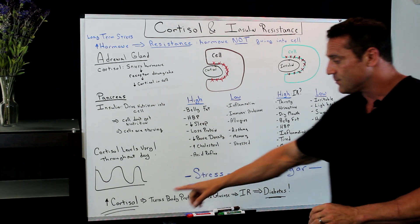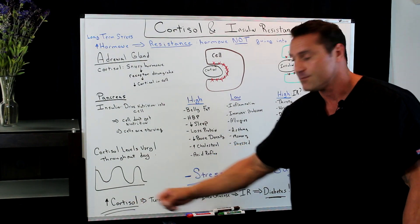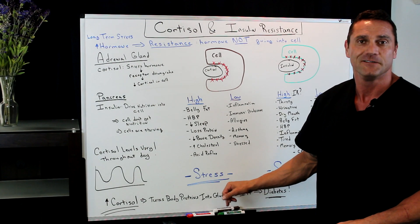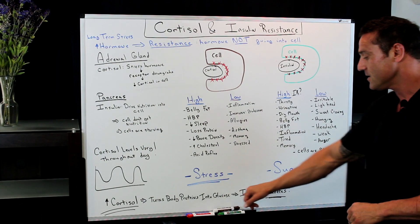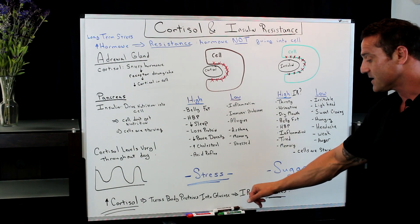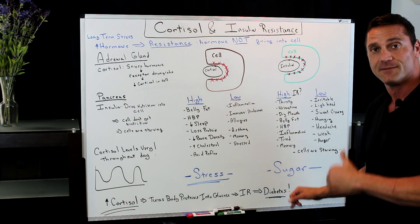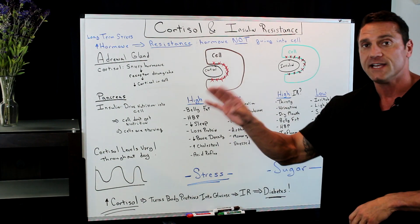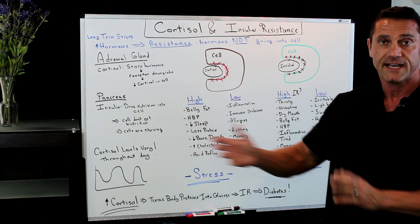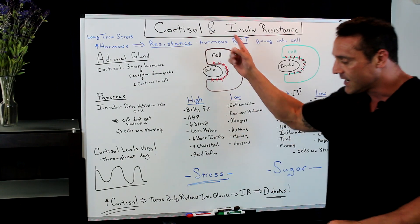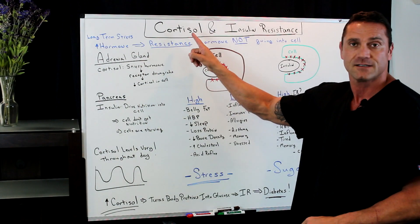When you have too much cortisol in your system, it turns the body proteins into glucose, which in turn, now you have too much glucose flowing around your system, which makes you become insulin resistant. This is where the possibility of diabetes increases. You don't actually have to be a diabetic because you eat a lot of foods. You can become a diabetic how? Just by too much stress.